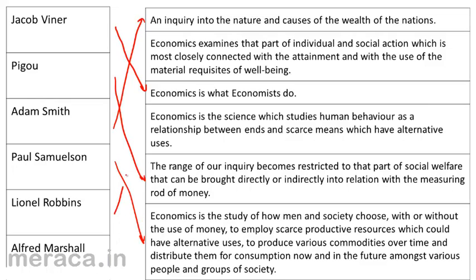Robbins said economics is a science — it studies human behavior as a relationship between ends and scarce means which have alternative uses. And finally, Marshall gave the welfare definition: an economist examines that part of individual and social action which is most closely connected with the attainment and use of the material requisites of well-being.